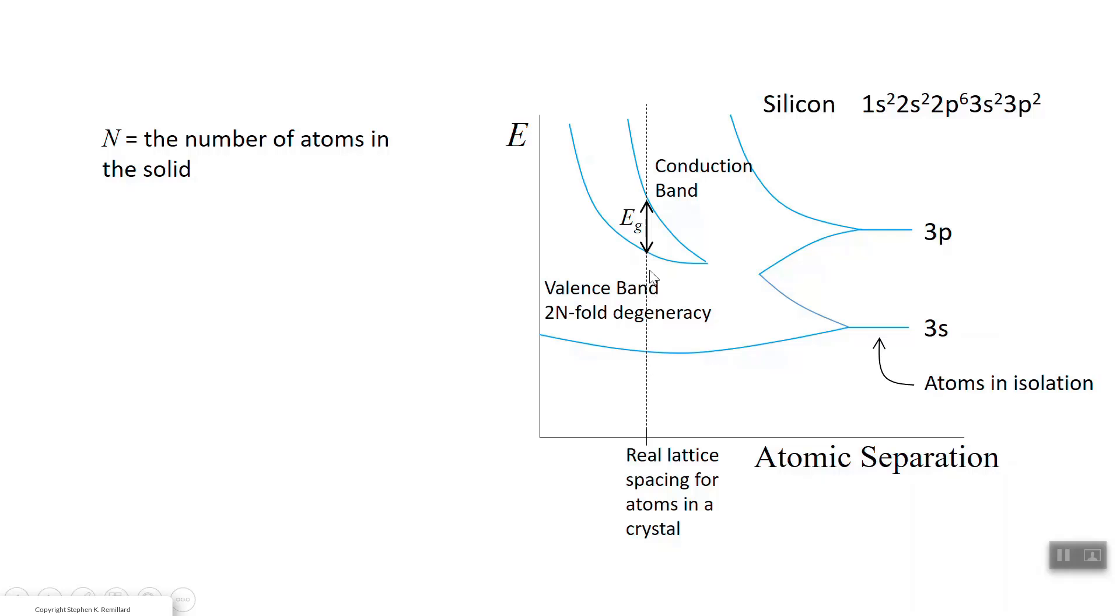This is the real lattice spacing for atoms in the silicon crystal. If the energy is down here, that belongs to an electron that's bound in the atoms. If the energy is up here, that belongs to an electron that is free to move. And if the energy is in here, it's forbidden. And that's your band gap.